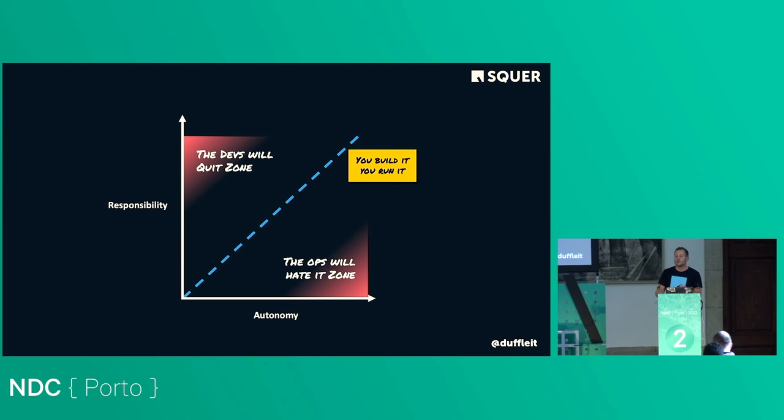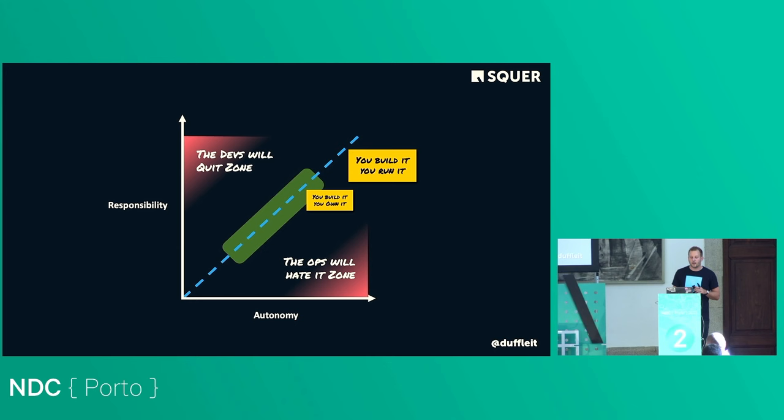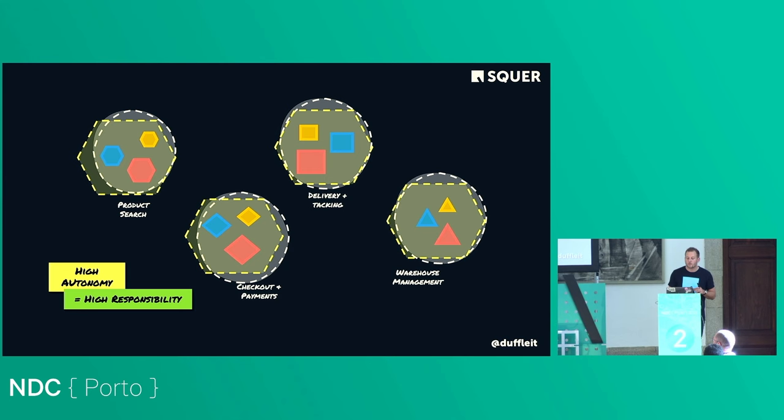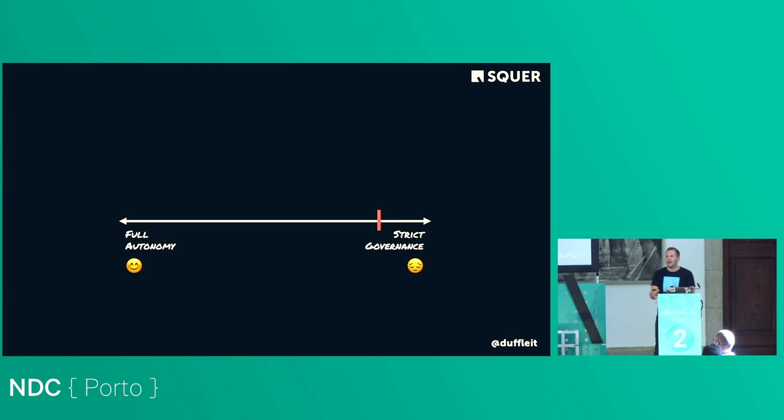On the other hand, if you expect a lot of responsibility from your teams but don't give them autonomy, they'll probably quit. Engineers quit fast when an organization doesn't make sense to them. I'm not saying you must follow 'you build it, you run it' — but autonomy always comes with responsibility.